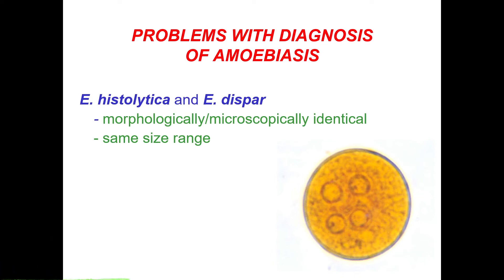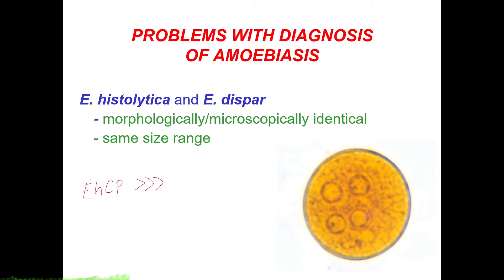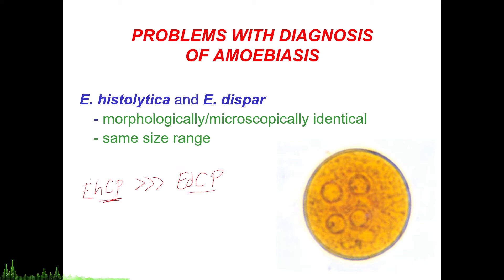In Western countries, approximately 20-30% of men who have sex with men are colonized with Entamoeba dispar, highlighting the oro-anal route of transmission. The Entamoeba histolytica cysteine proteases are much greater than those of Entamoeba dispar, around 10 to 1,000 times in magnitude difference. Since cysteine proteases are correlated with pathogenesis, the lack of sufficient cysteine proteases from Entamoeba dispar justifies it being non-invasive and thus non-pathogenic.